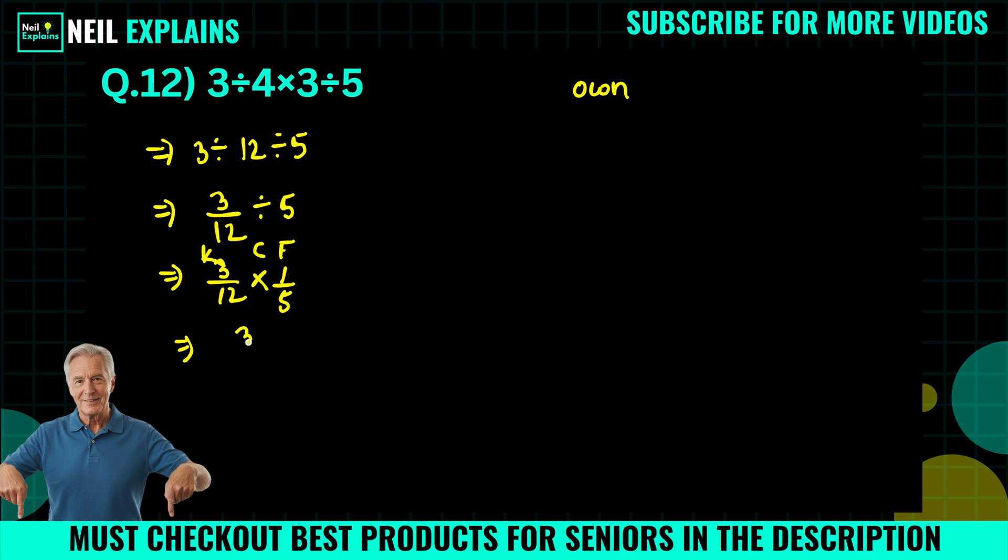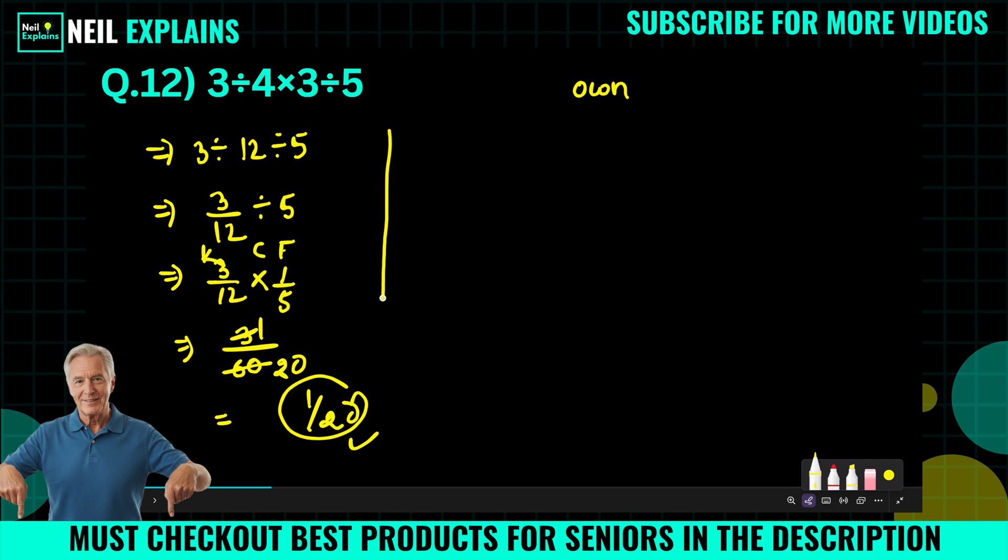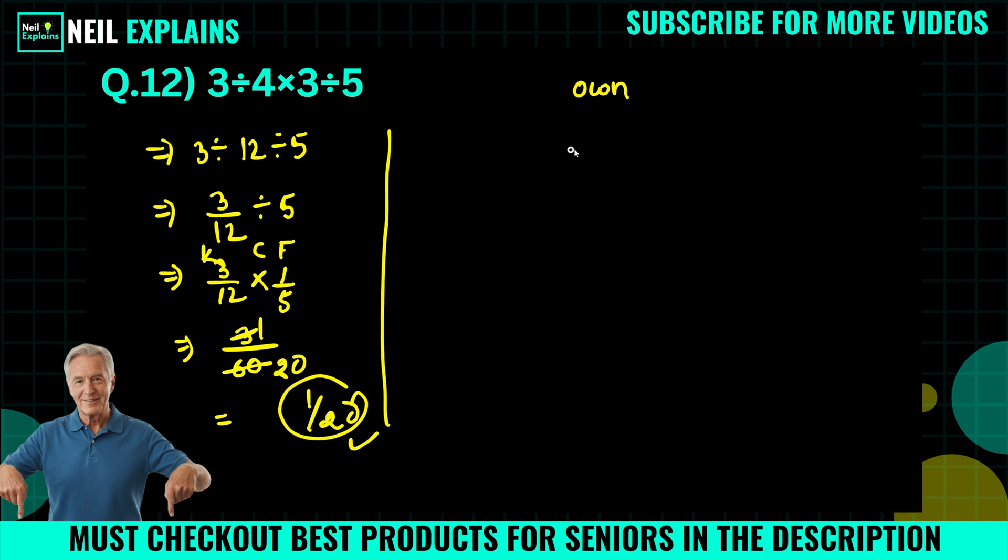Or you can say 3 divided by 60. 12 times 5, that is 60. 3 times 1 is 20. Or we can say 1 by 20. So do you think this is the right way? No.